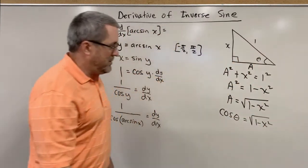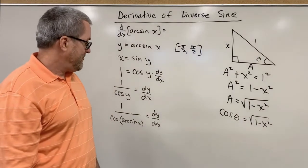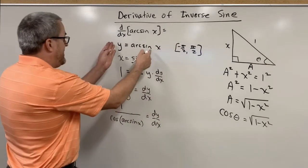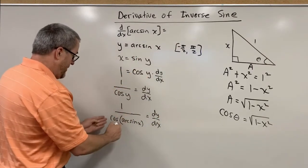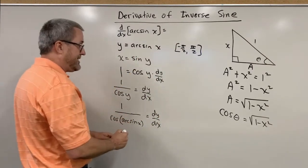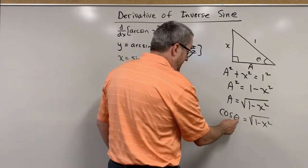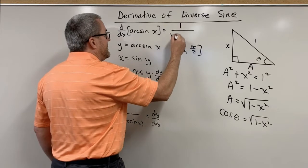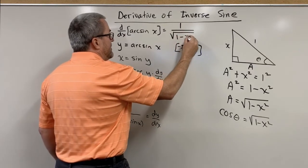So to simplify this thing, we'll come up here and just write our answer. The derivative of the arc sine of x is 1 over the cosine of the arc sine of x. And the cosine of that angle whose sine is x is this. So it's 1 over the square root of 1 minus x squared.